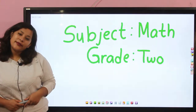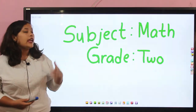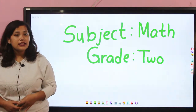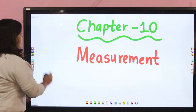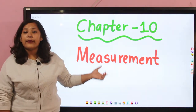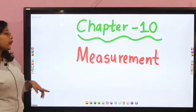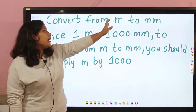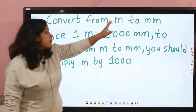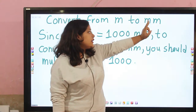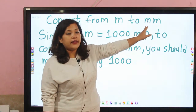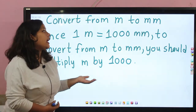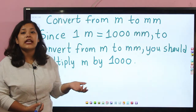Hello my dear kids, it's me your teacher Pratima Thapa and I would like to welcome you all to our math class of grade 2. We are in chapter 10, that is Measurement. Today we are going to learn a new topic: converting from meter — m means meter — to millimeter, written as mm. Now we have meter, so how do you change it to millimeter?